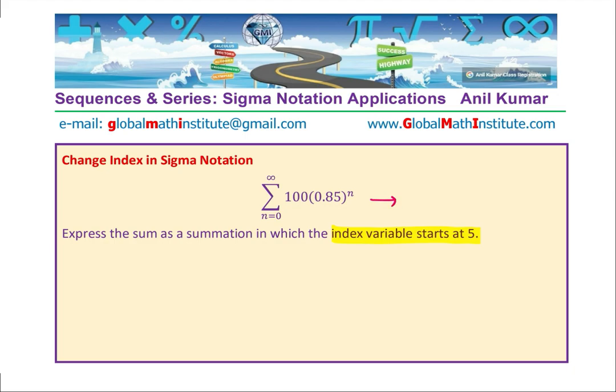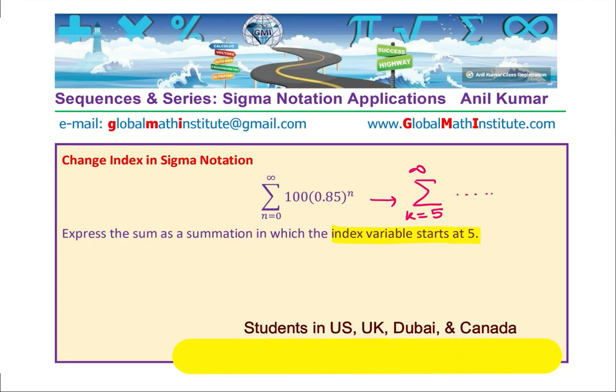So, what does that mean? That means that we will rewrite this as some dummy variable k which will start at 5. Of course, infinitely large will not change. And we have to figure out what this expression is. So, I hope the concept is absolutely clear. Now, I would like you to pause the video, answer this question and then check with my suggestions.